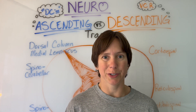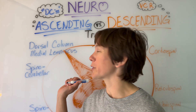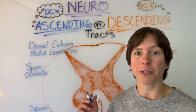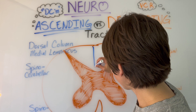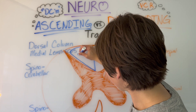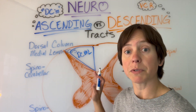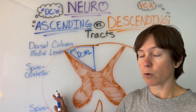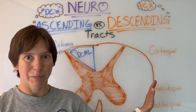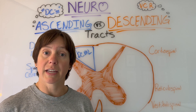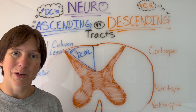Now let's see where these tracts are located inside the spinal cord. We'll start with ascending tracts. The dorsal column medial lemniscus goes up in a big triangle. I'm demonstrating ascending tracts on one half of the spinal cord and descending on the other half, but in real anatomy they are mirror images, equal on each side.